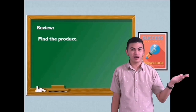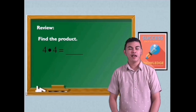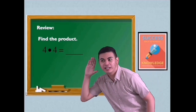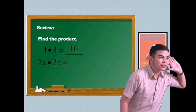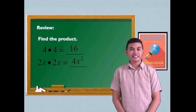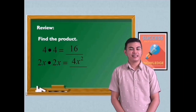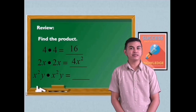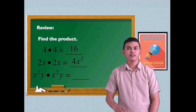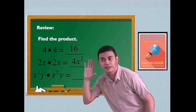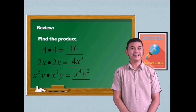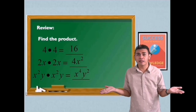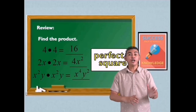Find the product. How about 4 times 4? What's the answer? 16. Correct. How about 2x times 2x? What's the answer? 4x squared. That's great! How about x squared y times x squared y? What's the answer? x to the fourth y squared. You did it. It has something to do with what? Perfect square.